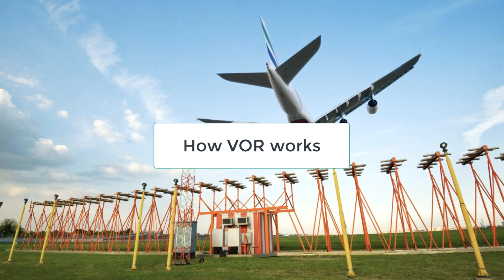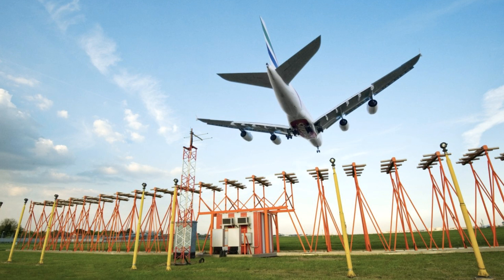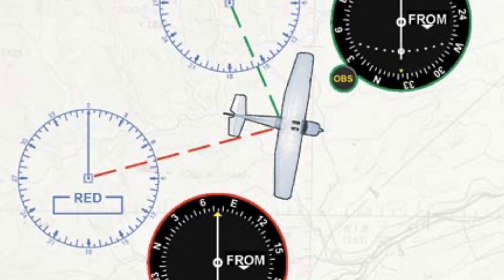The VOR system uses two radio signals transmitted by a ground-based station. These signals are known as the VOR and the Omnidirectional Bearing (OBI). The VOR signal is a rotating signal that contains a unique identifier code and provides directional information. The OBI signal is a fixed signal that provides an aircraft with its position relative to the VOR station.